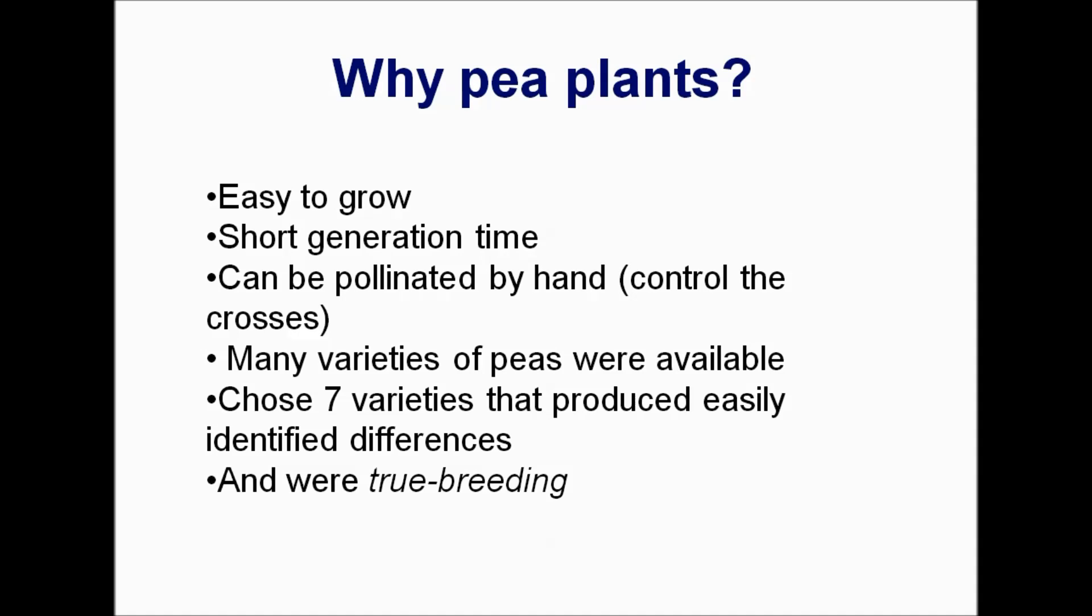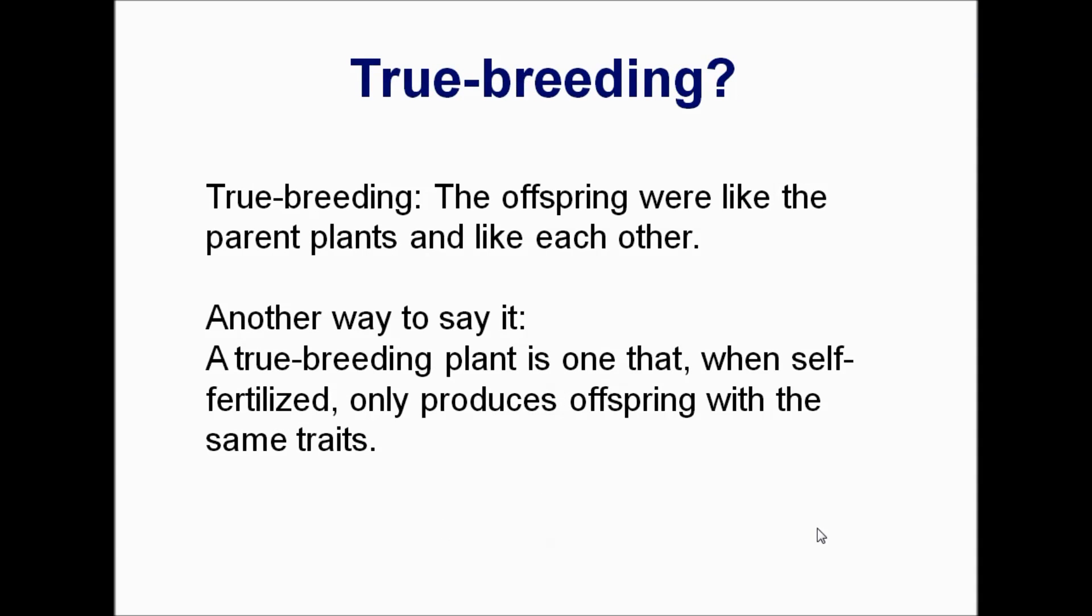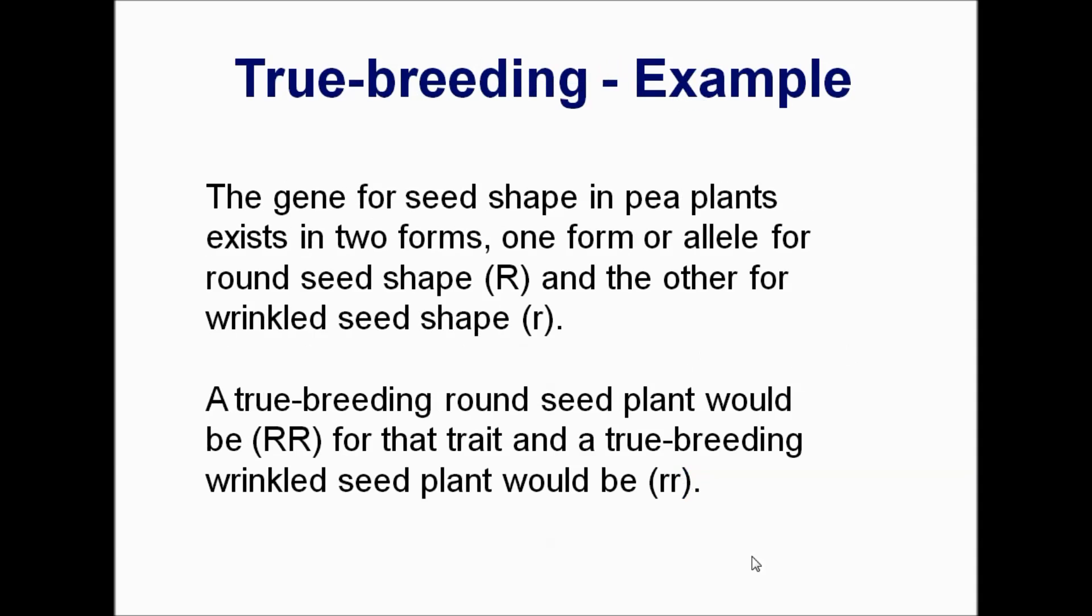He started working with pea plants in the garden of the monastery. Why pea plants? They were really easy to get, easy to grow. He could get lots of generations in short order versus animals that take so long for gestation and to become adults. So pea plants, generation fast, fast, fast. He could pollinate it by hand so he knew exactly what he had. Lots of varieties. He chose 10 specific ones, and they were true breeding. What does that mean? The offspring were like the parent plants and like each other. You'll find out soon that that means they were homozygous.